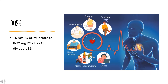Dose. The dose of this medicine will be different for different patients. For hypertension: 16 mg PO once daily, titrated to 8–32 mg PO once daily or divided every 12 hours. For CHF, NYHA class 2–4 with ejection fraction less than 40%: initial dose 4 mg PO once daily, doubled every 2 weeks up to 32 mg PO once daily.